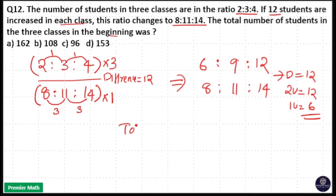That means the total units here is 6 + 9 + 12 = 27 units.